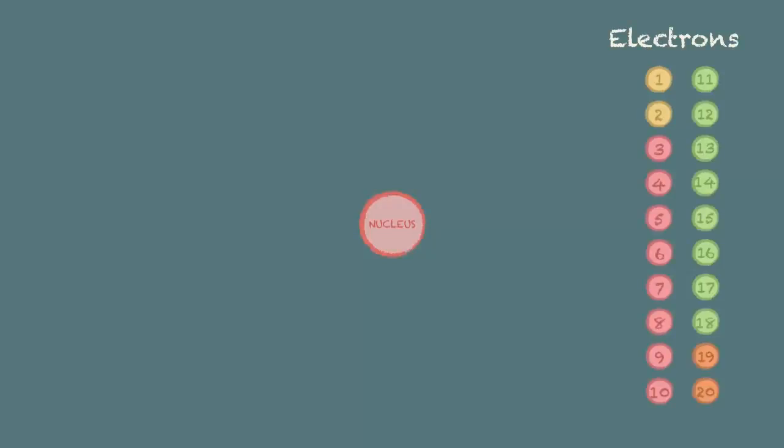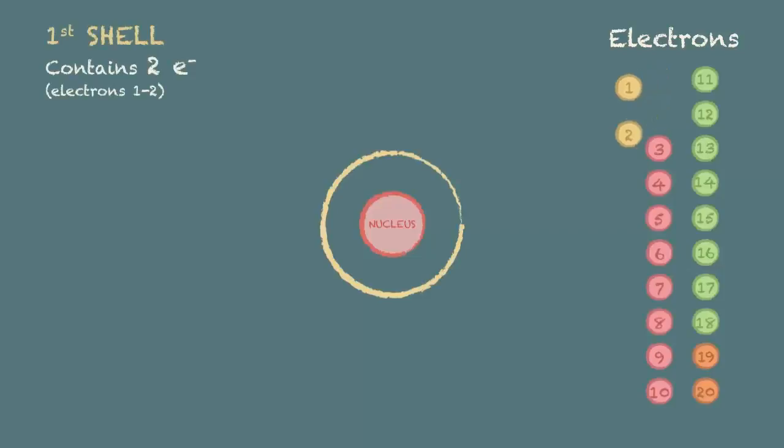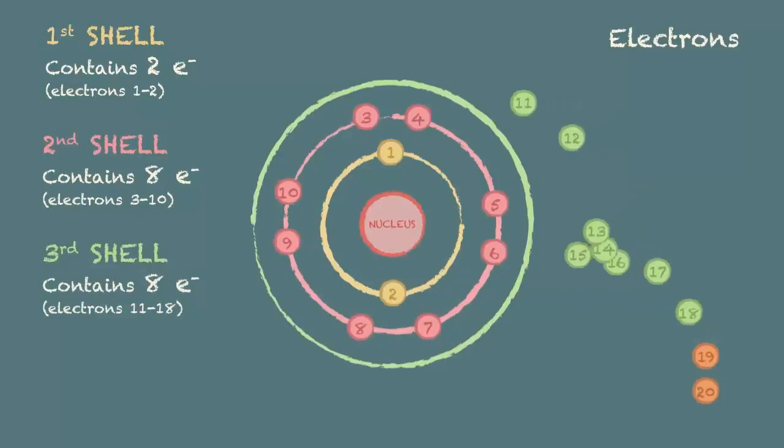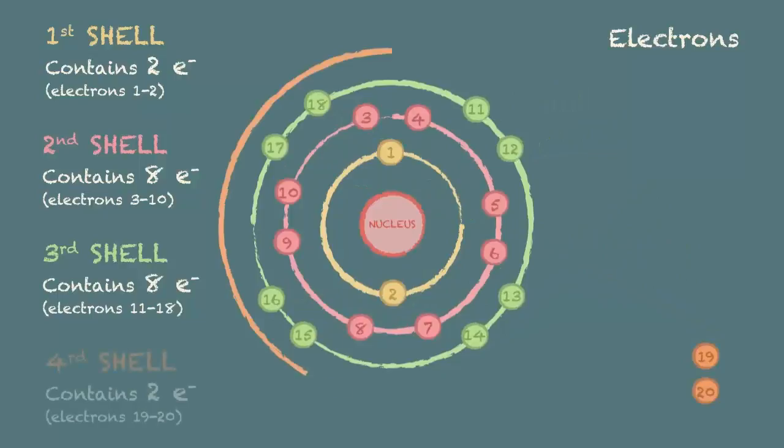The maximum numbers are as follows. The first shell can contain a maximum of two electrons. The second shell, up to eight electrons. The third shell also has a maximum of eight electrons. And the nineteenth and twentieth electrons go into the fourth shell.